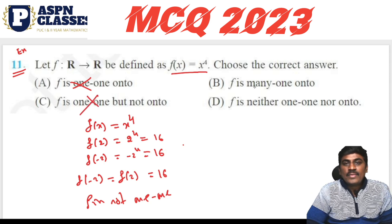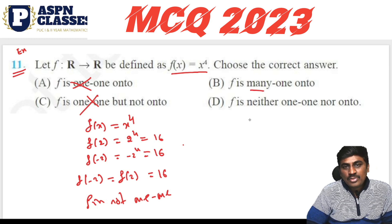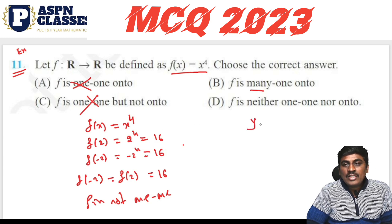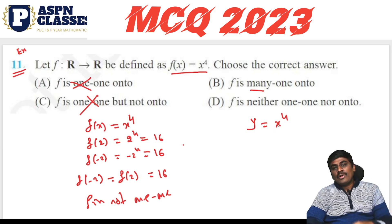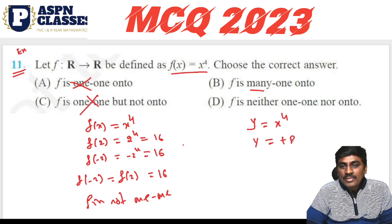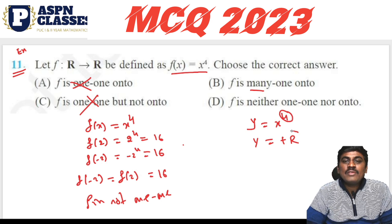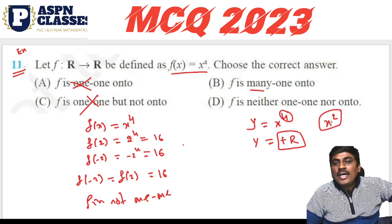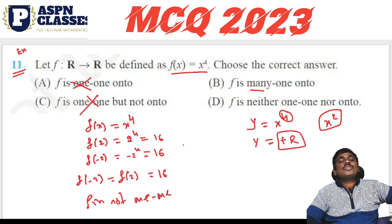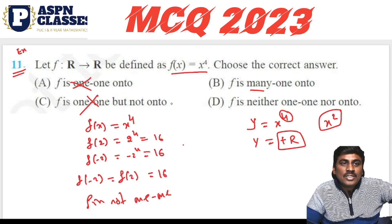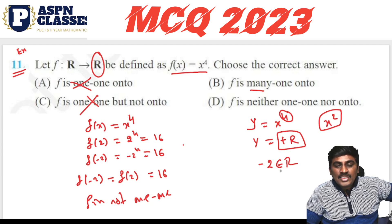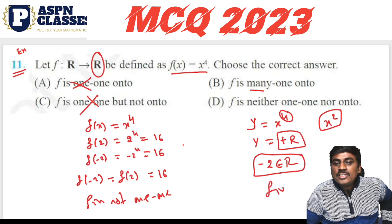Now check onto: y = f(x) = x⁴. The output is always a positive real number, because even power makes it positive. So negative real numbers like −2 are in the codomain R but have no pre-image. Therefore f is not onto.